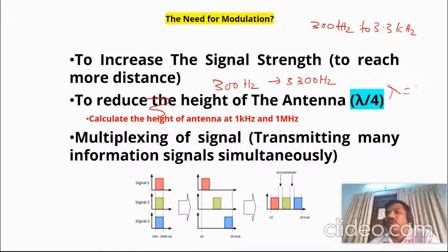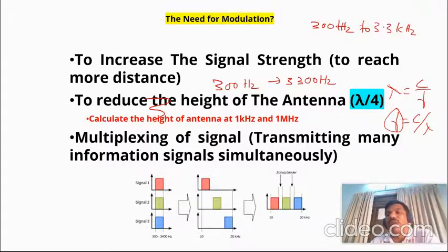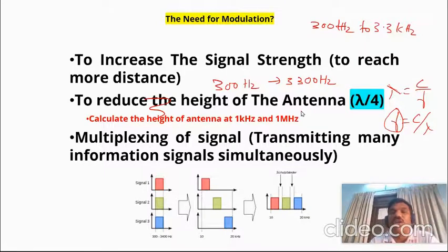Lambda is equal to c divided by f, where f is the carrier frequency — the frequency of the signal used for transmission. For proper reception and transmission through an antenna, the antenna height should be on the order of lambda by four, where lambda is the operating wavelength corresponding to the operating frequency.